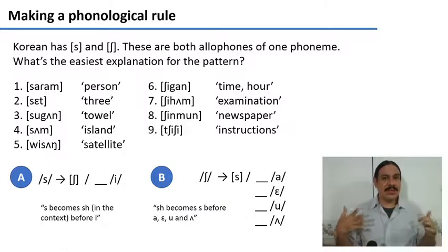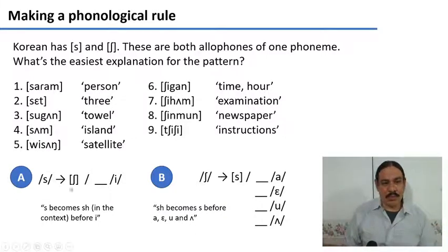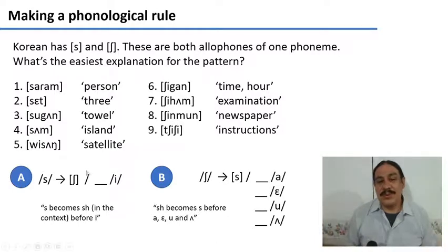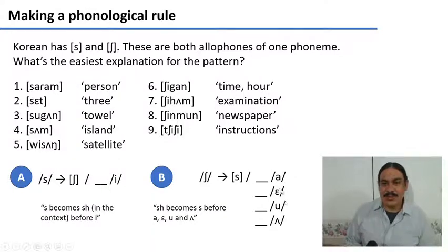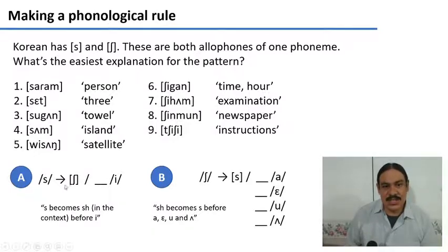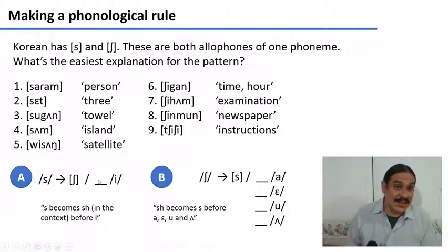So those are the two ways that we could explain what we see in the data: a rule that takes an S and transforms it into an Esh, or vice versa. Which of these two looks easier? Probably the one that has fewer conditioning environments. This one has only one environment, whereas the other rule has four things to explain how it works. So we're going to prefer the simpler rule, and we're going to say that the phoneme S is transformed into the allophone Esh — that S is the base form — whenever you have the S underlyingly followed by an E.